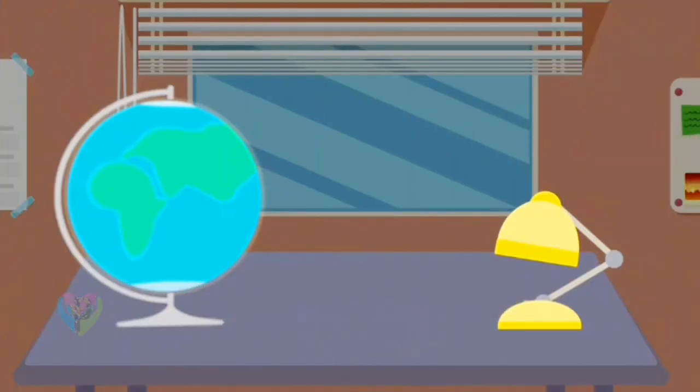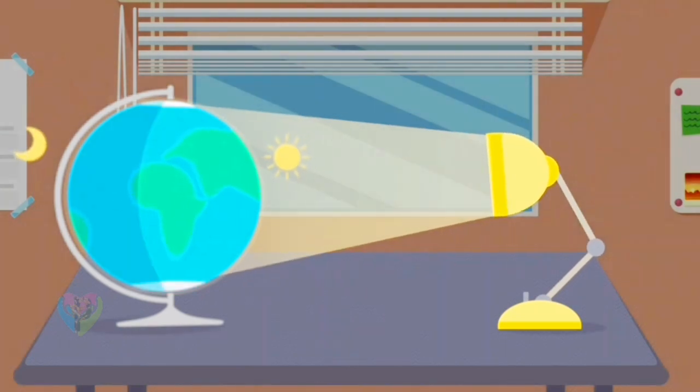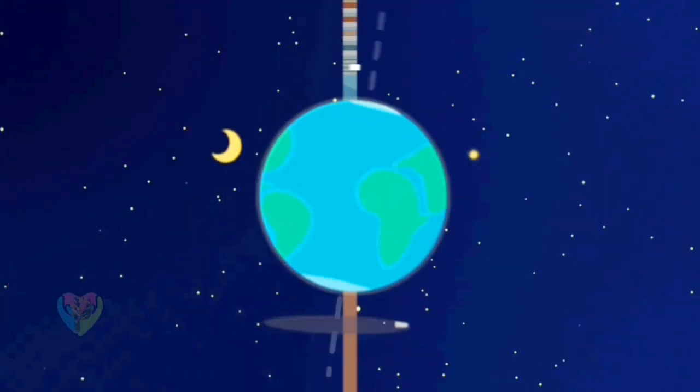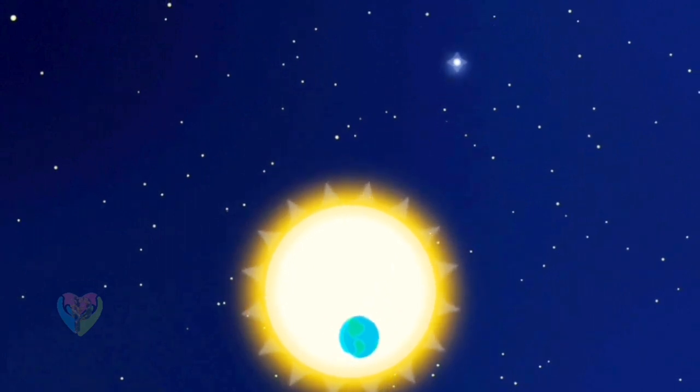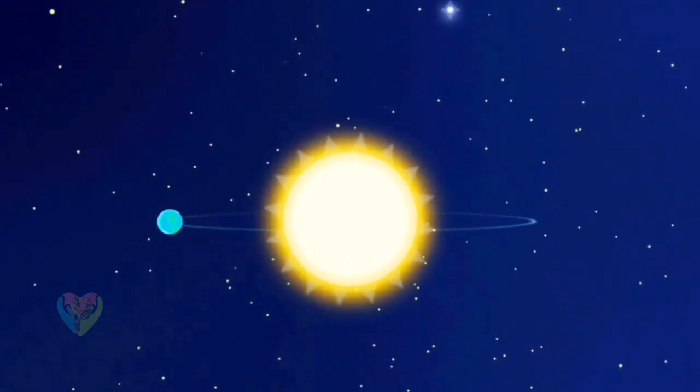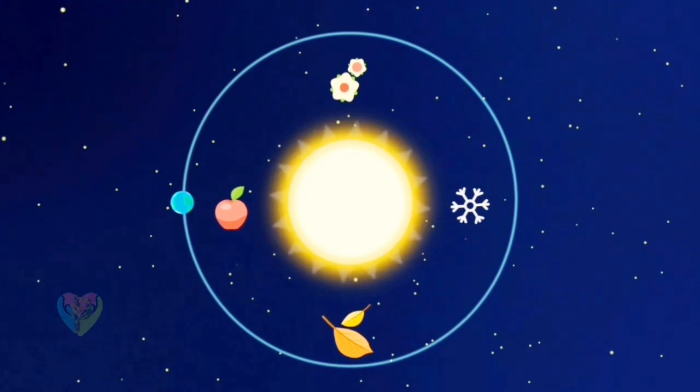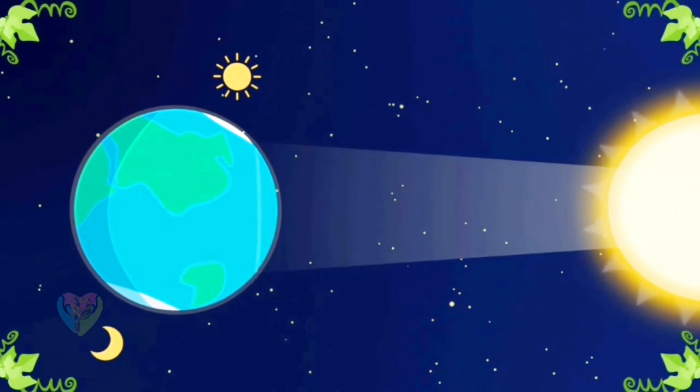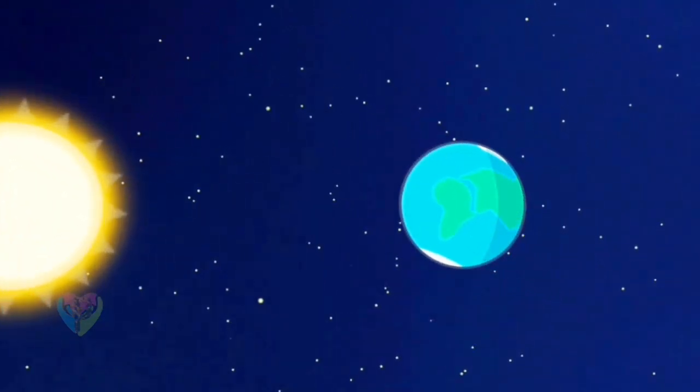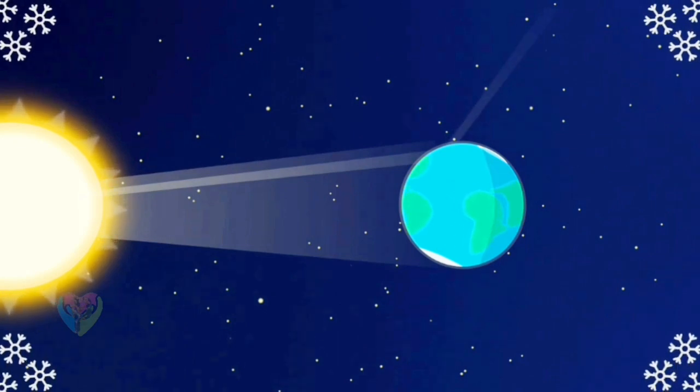The Earth rotates on its axis. That is why we see day change to night. This axis is tilted and is always pointed in one direction, towards Polaris. Because of this tilt, the Earth positions its sides toward the sun differently in each season. Once solar rays fall straight, it gets hotter, and summer comes. If the rays fall at an angle, the heat is lower, and winter comes.